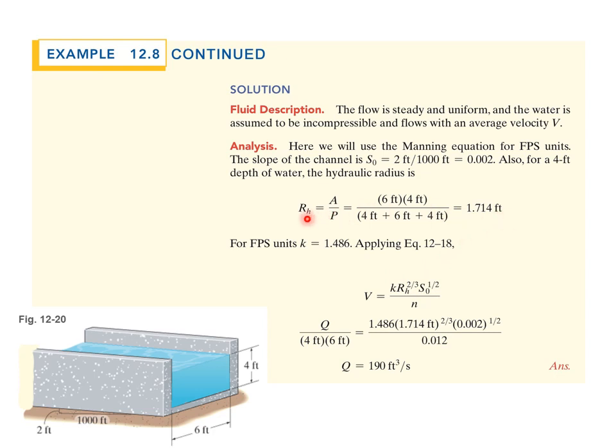Given those, we can determine the hydraulic radius is A over P. The area is 6 foot times 4 feet. And the perimeter is 4 feet plus 6 feet plus 4 feet. Notice we do not include the top part because that's just open surface. So the hydraulic radius is 1.714 feet. Since this is English units, we're going to choose our K value is 1.486.